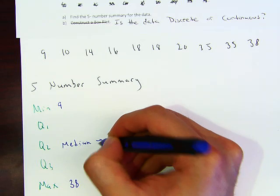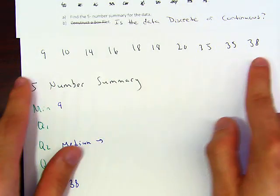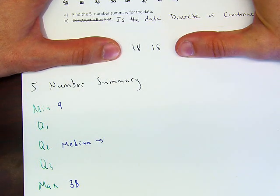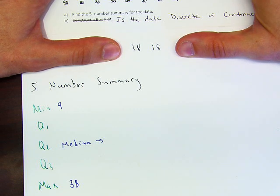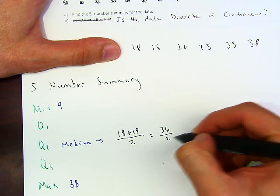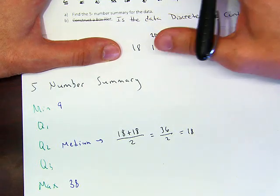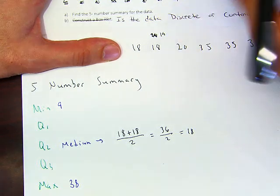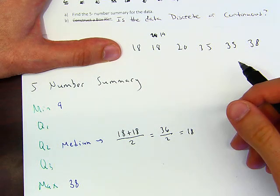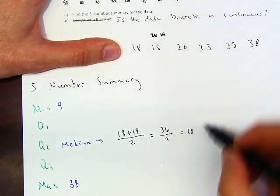Now, how do we find the median with 10 data values? Take four away from each side and we're left with 18 and 18 in the middle. The median is (18 + 18) / 2 = 18. For example, if that second value were 19 instead, it would be (18 + 19) / 2 = 18.5. But here the median, Q2, is 18.